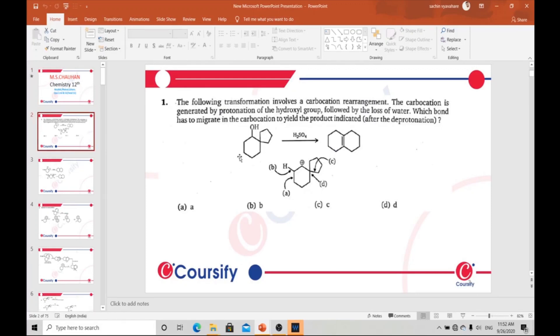The question is: the following transformation involves a carbocation rearrangement. The carbocation is generated by protonation of the hydroxyl group followed by the loss of water. Which bond has to migrate in the carbocation to yield the product indicated after the deprotonation?